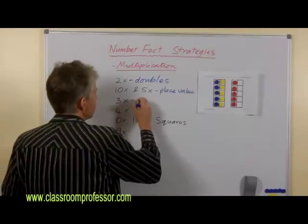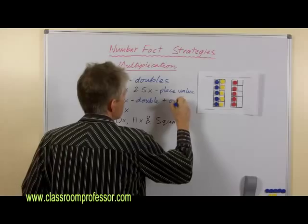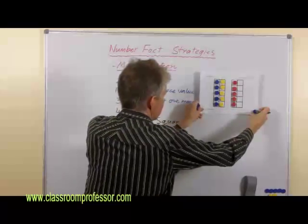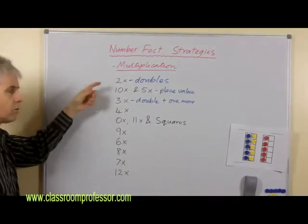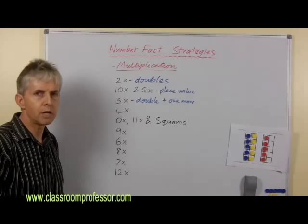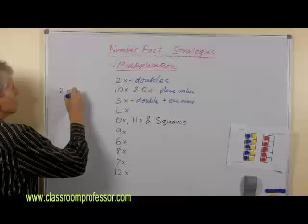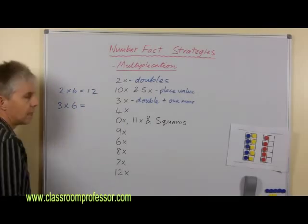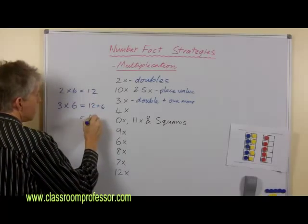Three times, the three times strategy is double plus one more. So we rely on the two times number of factors that students already know. And we say, okay, you already know, for example, what two times six is. Two times six is twelve. What's three times six going to be? Well, that's going to be twelve plus another six. And that's eighteen.